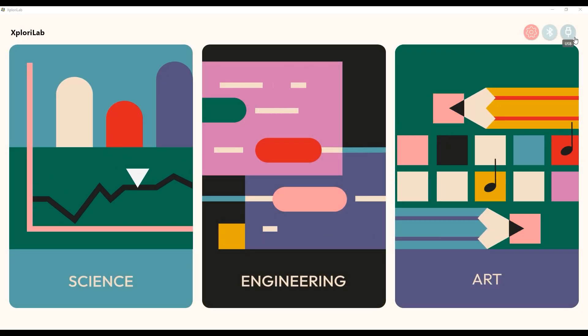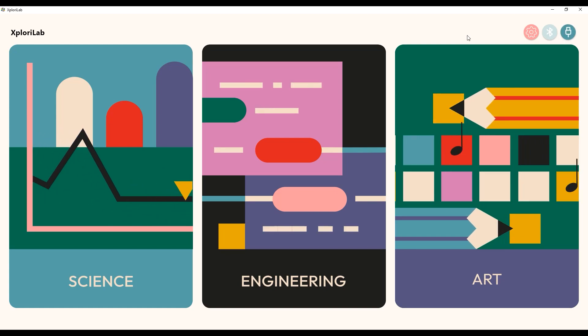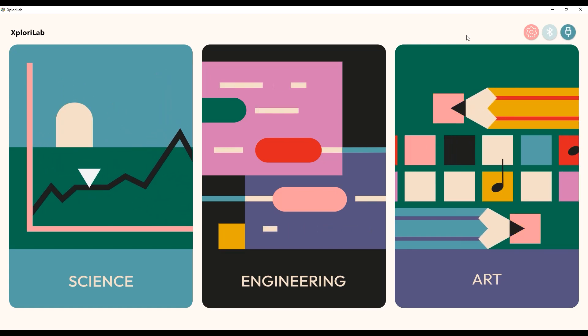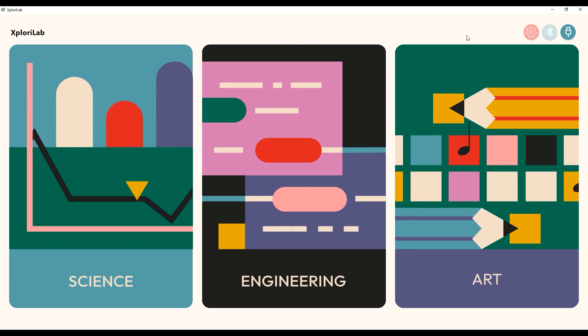If using that method, go to the top right corner of XploriLab and click where it says USB. It will turn a darker blue, letting you know your connected Xploris is talking to the software.